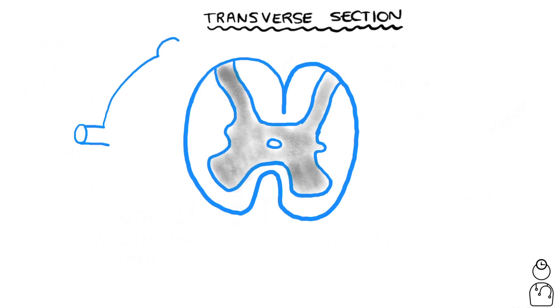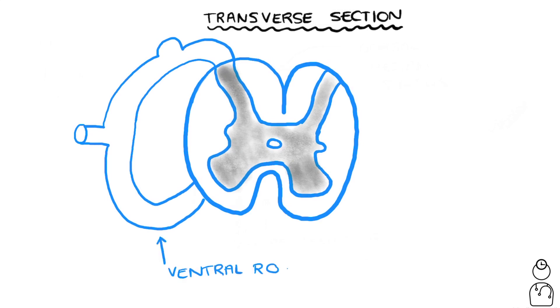There are a few more structures that we need to add. We have the ventral root and the dorsal root here, and these two combine to form a spinal nerve, which is what ultimately carries nerve signals to the body.